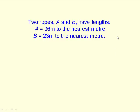Hi again. We're going to be talking about upper and lower bounds of measurements again. This time we've got two ropes with lengths 36 and 23 metres, both measured to the nearest metre. So what are the upper and lower bounds of their lengths?